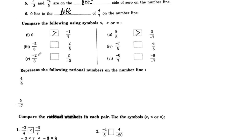For negative 2 by 5 and 2 by 5: 2 by 5 is greater than negative 2 by 5, so negative 2 by 5 is less. Here we also have negative 7 by 5 and 6 by 5, and negative 2 by 3 is less than negative 2 by negative 3.